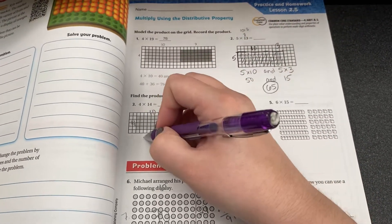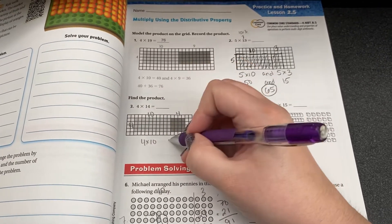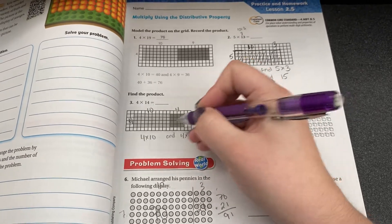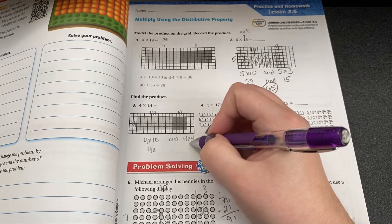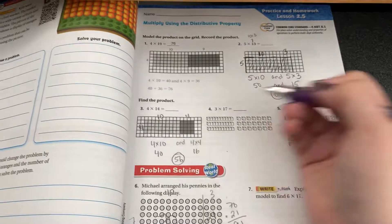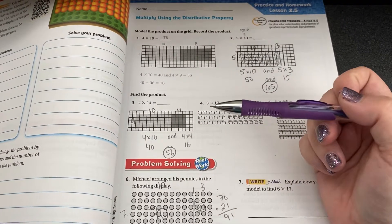So now I can do four times ten, which is this array right here, and four times four, which is this array over here. Four times ten is forty, and four times four is sixteen. We put those back together and we get fifty-six. Same thing. We add all those boxes together, we go through and count all of them, we're gonna get fifty-six.